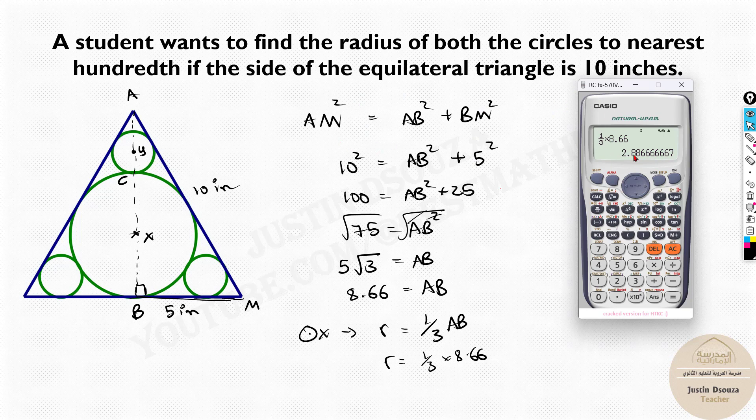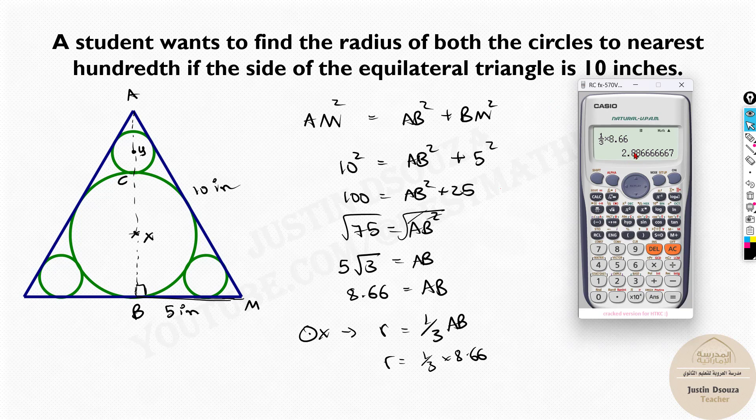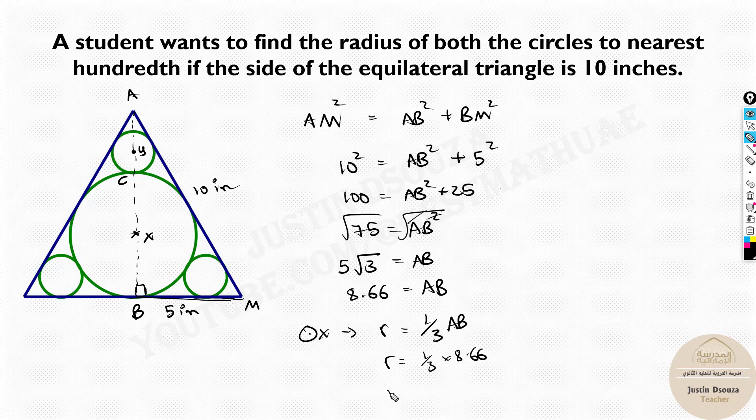Now let's consider nearest hundredth. That means two decimal points after the decimal. So it's 2.88, and since it's 6, I'll round up to 2.89. Radius for the larger circle is 2.89 inches. So one circle is done. What about the other circle?